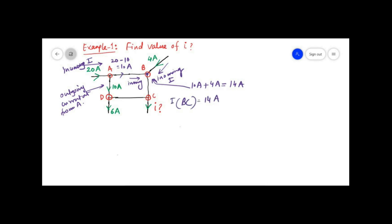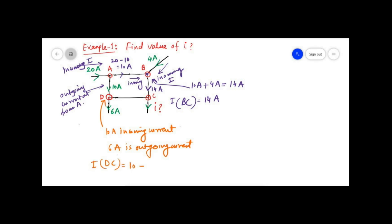At node D, 10 ampere is incoming current and 6 ampere is outgoing current. So the current in branch DC is 10 minus 6 equals 4 ampere. From node D, 4 ampere will pass through branch DC.